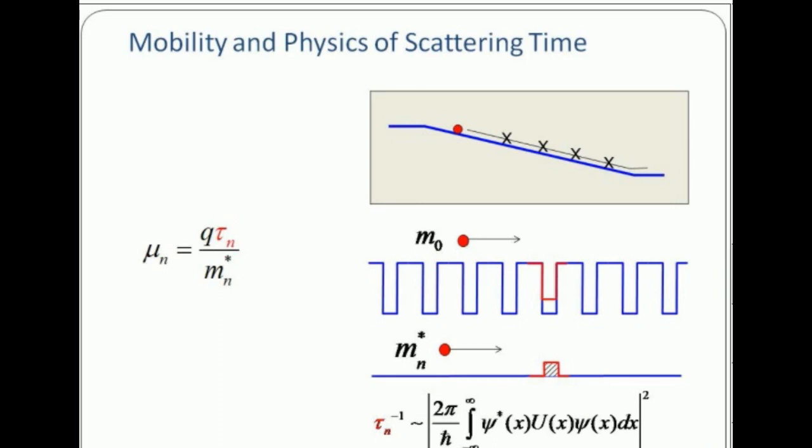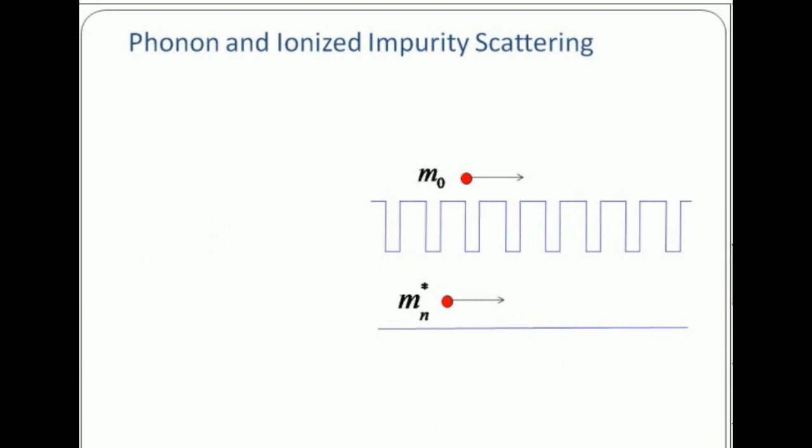I'm not telling you exactly how to calculate it—it will not be in the exam—but the point is this is how people would calculate this type of scattering. So there are two types of scattering that are of great interest that slow down the electron. One is called phonon scattering, and the second is ionized impurity scattering.